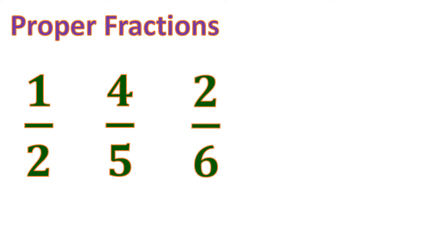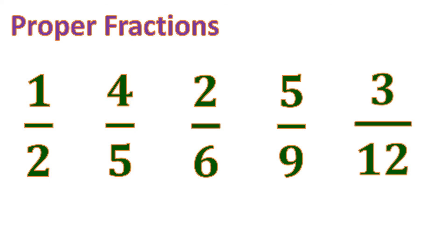We have two-sixths, five-ninths, and three-twelfths. All of these are fractions containing a smaller value in the numerator than the denominator. Proper fractions don't have whole numbers — they are just completely a fraction where the numerator, which is the one on top, is smaller than the denominator, which is the one on the bottom.